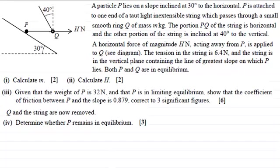Well, first of all, if Q and the string are now removed, we're going to have a situation like this. Our particle P is just going to be on this rough inclined plane. Now first of all, what I'm going to do is we'll just put in some of the forces then that are acting on P, and we've got the weight clearly acting on P, that's going to be 32 newtons.